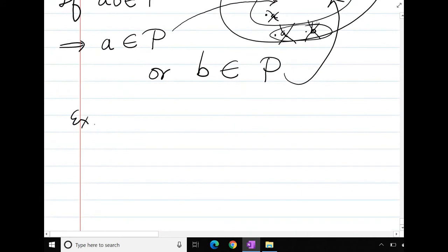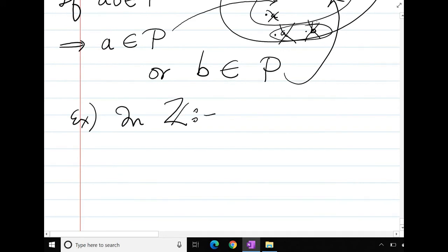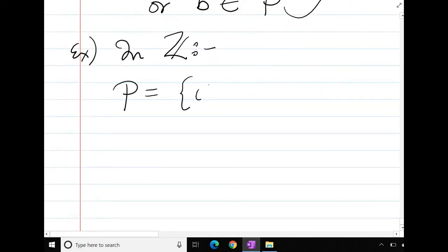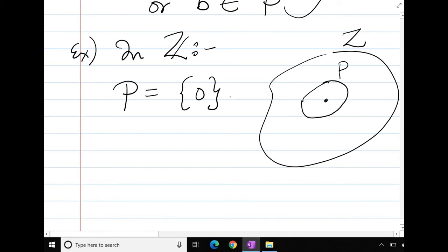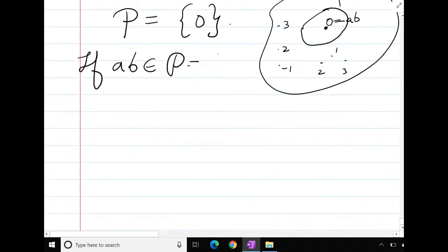Now, simple example to understand. We look at Z. I am looking at the set P, singleton {0}. So this is also going to be an ideal. And P is only having one element, zero. All other numbers are outside. So if ab belongs to P, if ab belongs to P, this P has only zero. So this means ab must be zero.